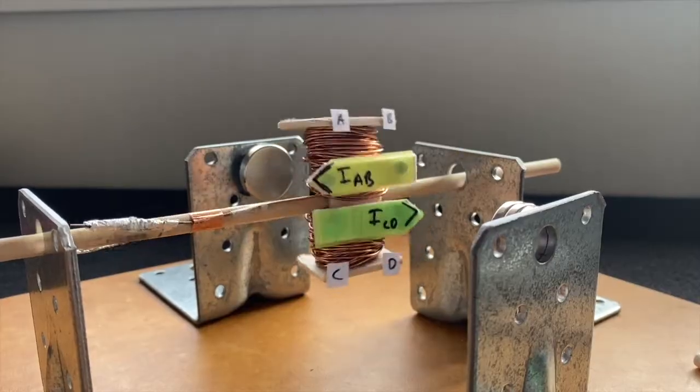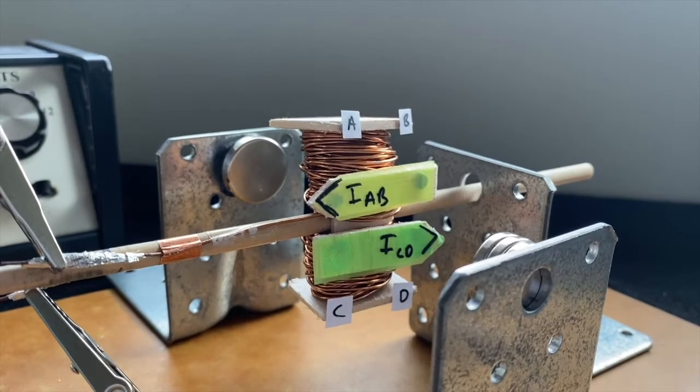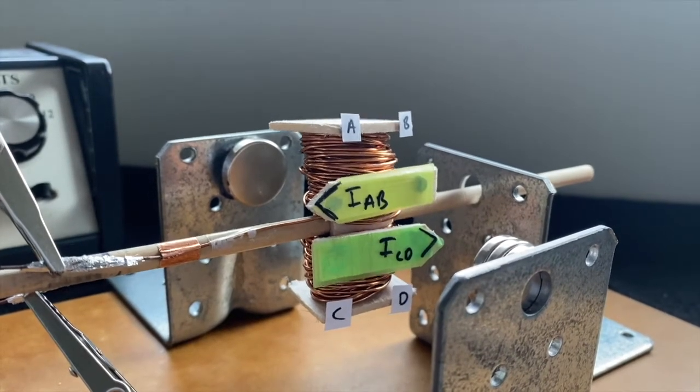Because the direction of the current on either side of the coil is constant, the direction of the force on each side will also always be constant, causing the motor to just slightly wobble back and forth on its axis.